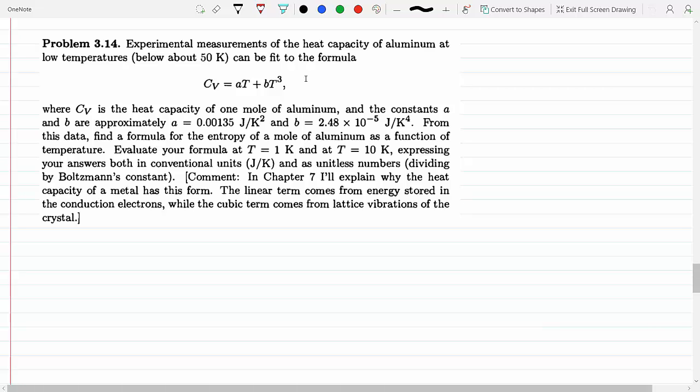Experimental measurements of heat capacity of aluminum at low temperatures is a function of temperature. In chapter 7 we will learn more about this model. We have the constants a and b from this data. We have to find a formula for the entropy of a mole of aluminum as a function of temperature.